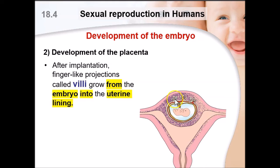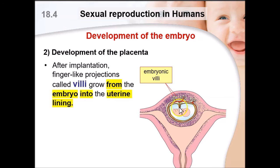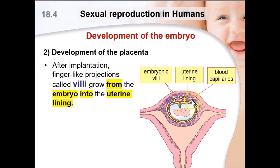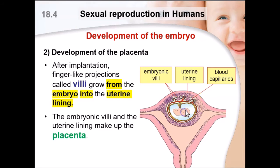After implantation, finger-like projections known as villi grow out from the embryo — from the ball of cells — into the uterine lining. This is when implantation is considered successful. We call them embryonic villi because they look like the villus in the small intestine and come from the embryo. The uterine lining must be thick to support this growth, and there are blood capillaries inside each embryonic villus.